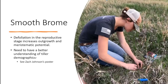Takeaways from this project: defoliation in the reproductive stage increases outgrowth. What we really need is a better understanding of tiller demographics — Zach Johnson has a poster on that, actually looking at tiller demographics, so I think that'll be interesting to see what he's finding.